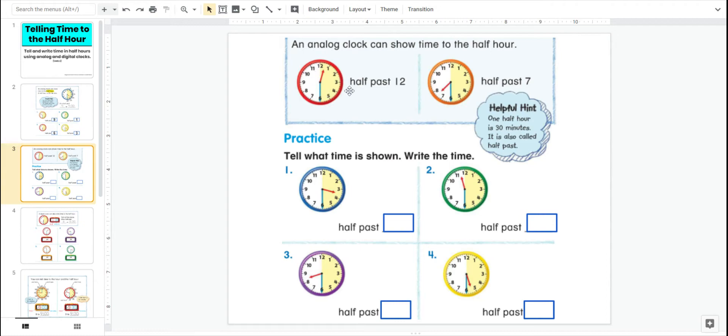Remember the analog shows time to the half hour by having the long hand on the six. So this is half past 12 because the hand has gone past the 12. And this is half past seven because the hour hand has gone past the seven. Let's look at these blue ones. What time is shown? Good. It's half past three. How about this spring one?